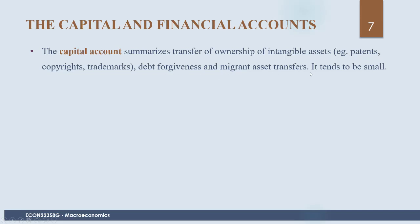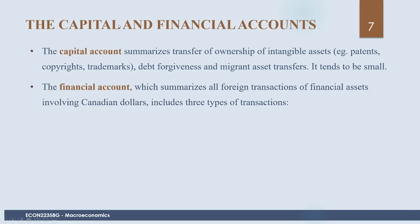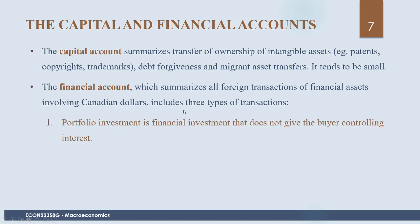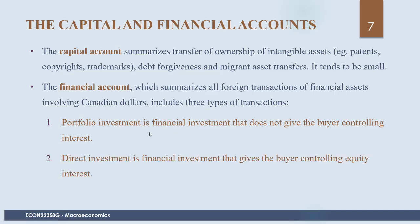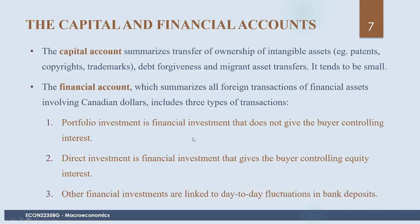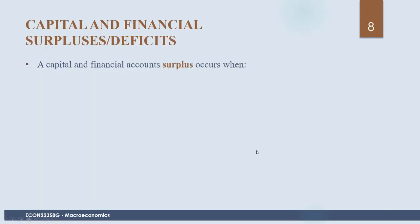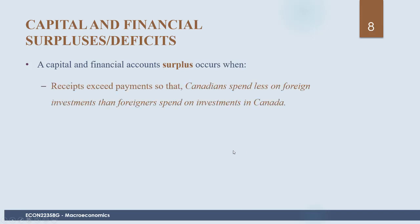The financial account summarizes all foreign transactions of financial assets involving Canadian dollars, and includes three types: portfolio investment (a financial investment that does not give the buyer controlling interest), direct investment (a financial investment that gives the buyer controlling equity interest), and other financial investments linked to day-to-day fluctuations in bank deposits. A capital and financial account surplus occurs when receipts exceed payments — meaning Canadians spent less on foreign investments than foreigners spent on investments in Canada.